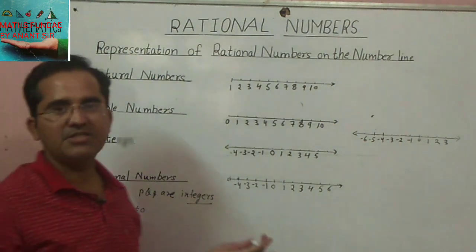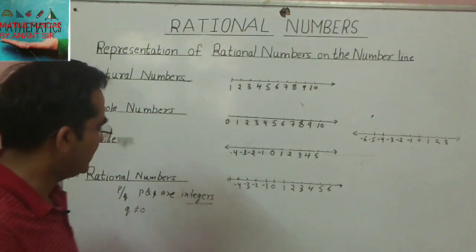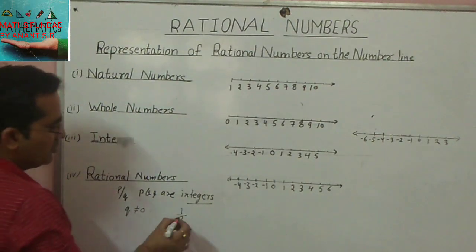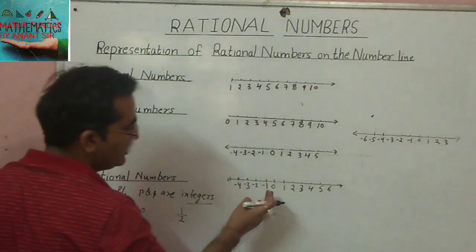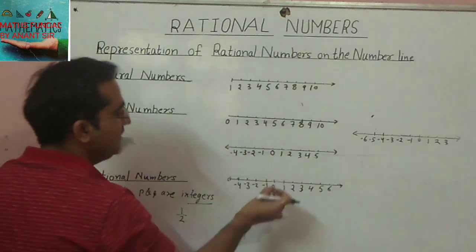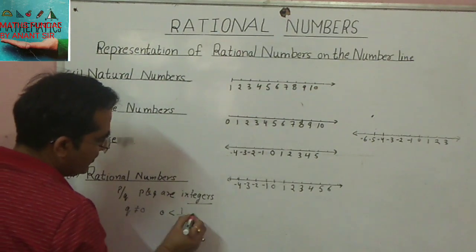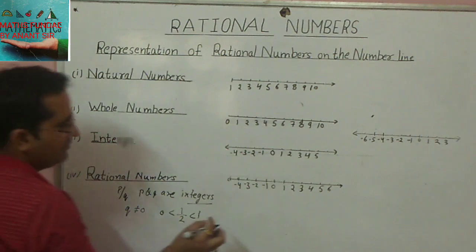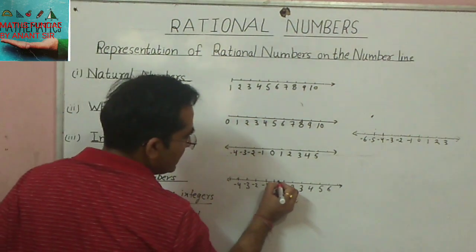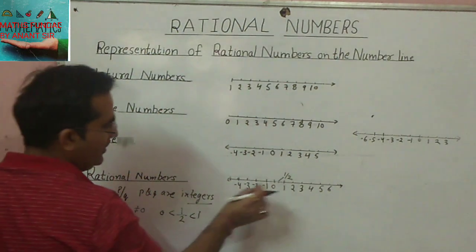Whether it's a positive or negative rational number, examples make it easy. Take the rational number 1 upon 2. Since 1 upon 2 is greater than 0 but smaller than 1, it lies between 0 and 1 on the number line. We mark that point as 1 upon 2.